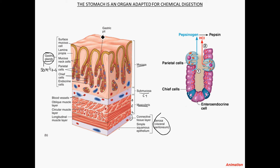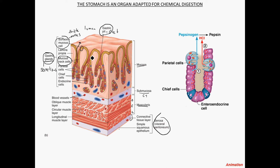Looking at the microscopic anatomy of the surface, we see these gastric pits. These pits are the openings — essentially the ducts — through which secretions are released into the lumen of the stomach. The first cells we encounter moving down one of these pits are the surface mucus cells, which secrete thick mucus. Moving further down, we have mucus neck cells that also help produce mucus, which is then propelled out of the duct.